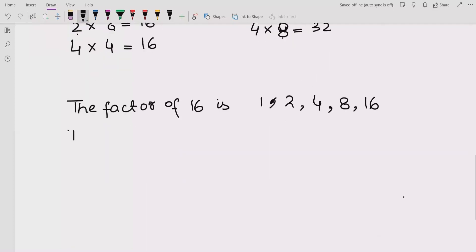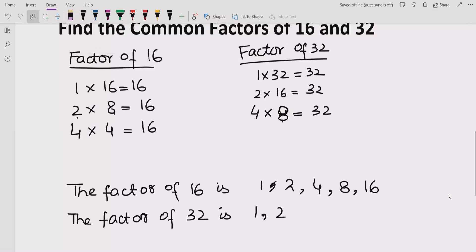So the factors of 32 are 1, 2, 4, 8, 16, and 32.